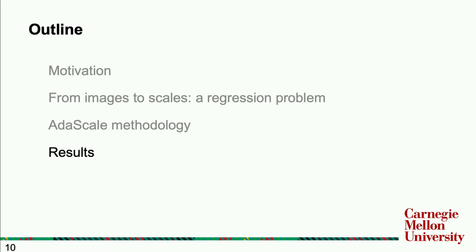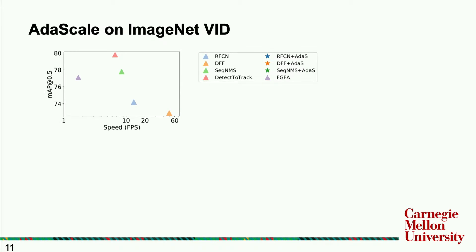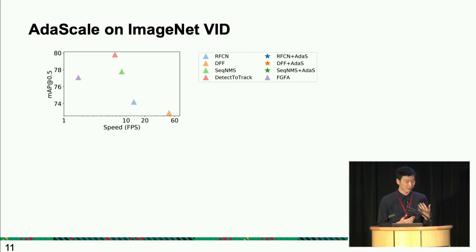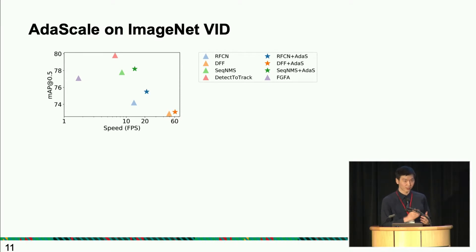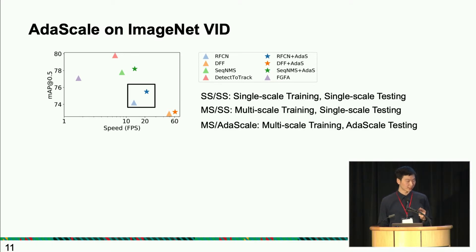Now let me dive into our results. The first result is on the ImageNet video dataset. We plot several prior art methods in video object detection. On the right-hand side we have the state-of-the-art Deep Feature Flow, the fastest video object detection method. The blue one is our baseline object detector RFCN, along with other video object detection methods. With AdaScale, we can push the Pareto frontier further in terms of both accuracy and speed.